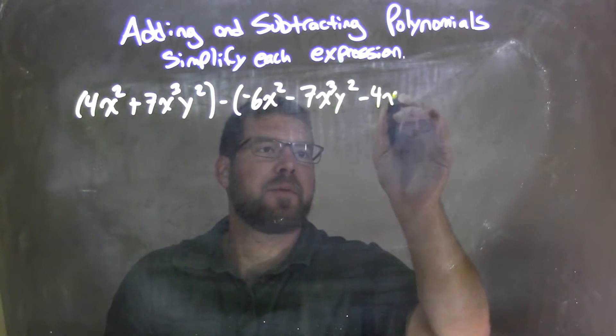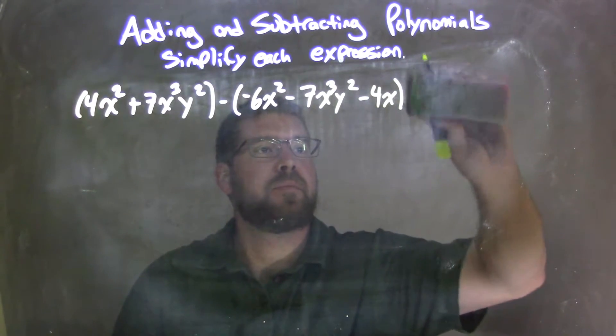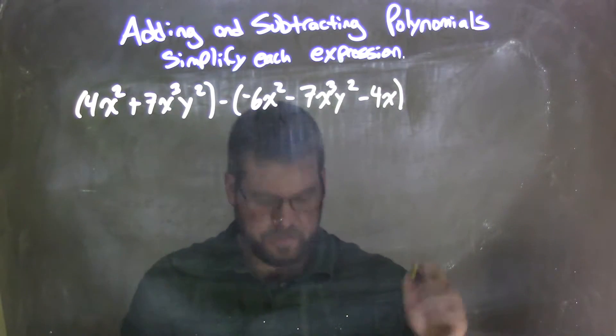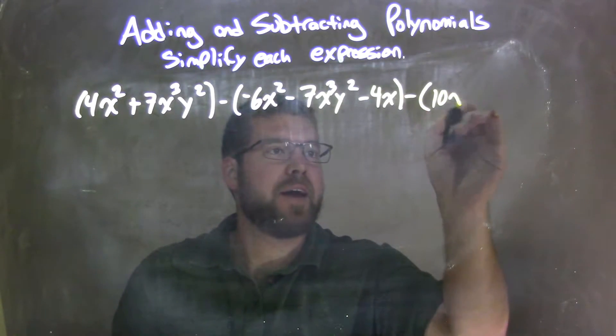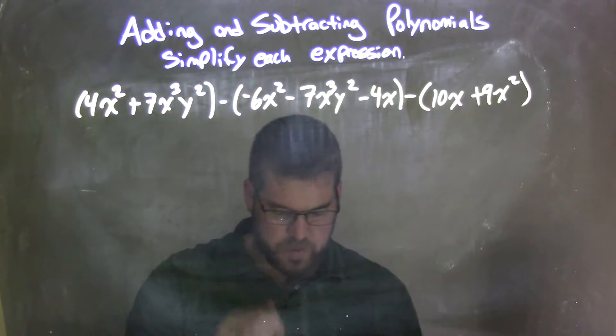5x squared minus 4x, next parenthesis, and then we're going to subtract them. In parentheses, 10x plus 9x squared. There we go, got it all down.